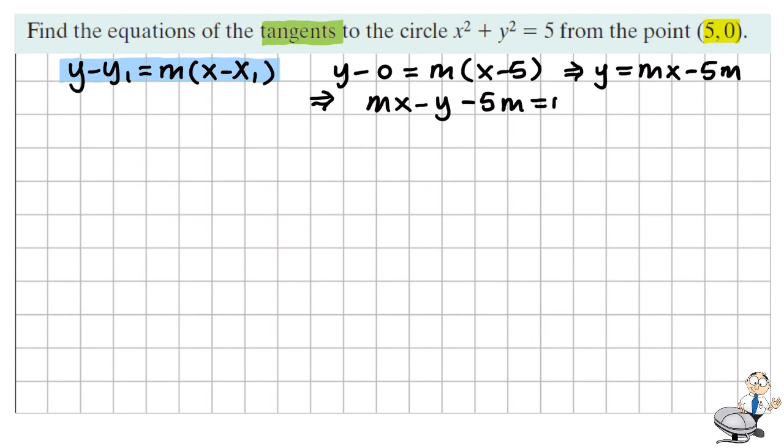We'll write this out in the standard form so we have the x part, the y part, the constant part equals zero. So this is our equation for tangents. If you know what m is, the problem is sorted.